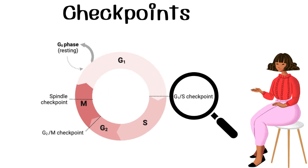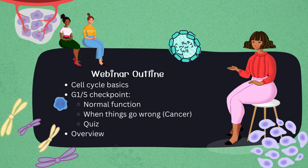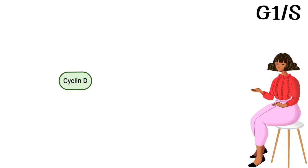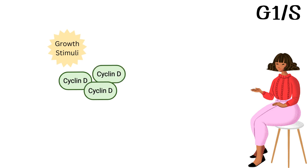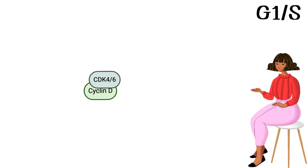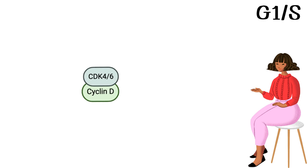Let's jump into the first checkpoint and look at its normal function. Normally, cyclin D is inhibited by a protein called P16. However, when the cell receives growth stimuli, the amount of cyclin D goes up and the cell enters the G1 phase. Cyclin D is part of a family of proteins that regulate the cell cycle. Cyclins partner with a family of enzymes called cyclin-dependent kinases, or CDKs. By itself, CDKs are inactive, but when a cyclin binds to it, it becomes an active enzyme.